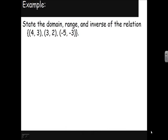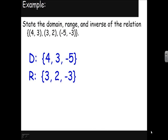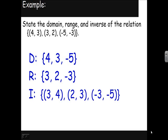In this example we're going to state the domain, range, and inverse of the relation. The domain recall is basically all the values that x can be - in this case x is only 4, 3, and -5, so that's our domain. The range is all the values that y can be, or actually take on - in this case 3, 2, and -3. The inverse of a function just takes the domain values and switches them with the range values.